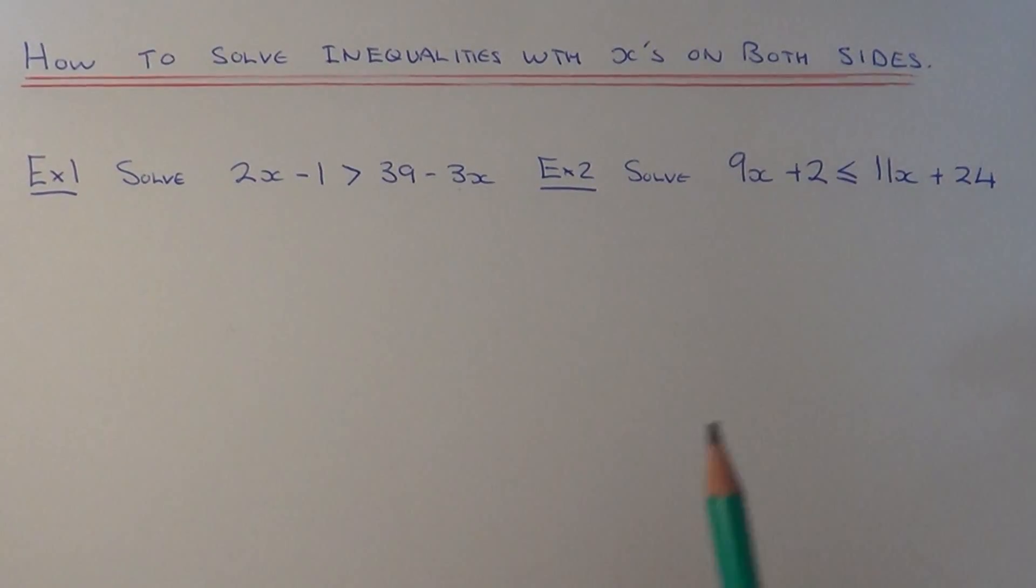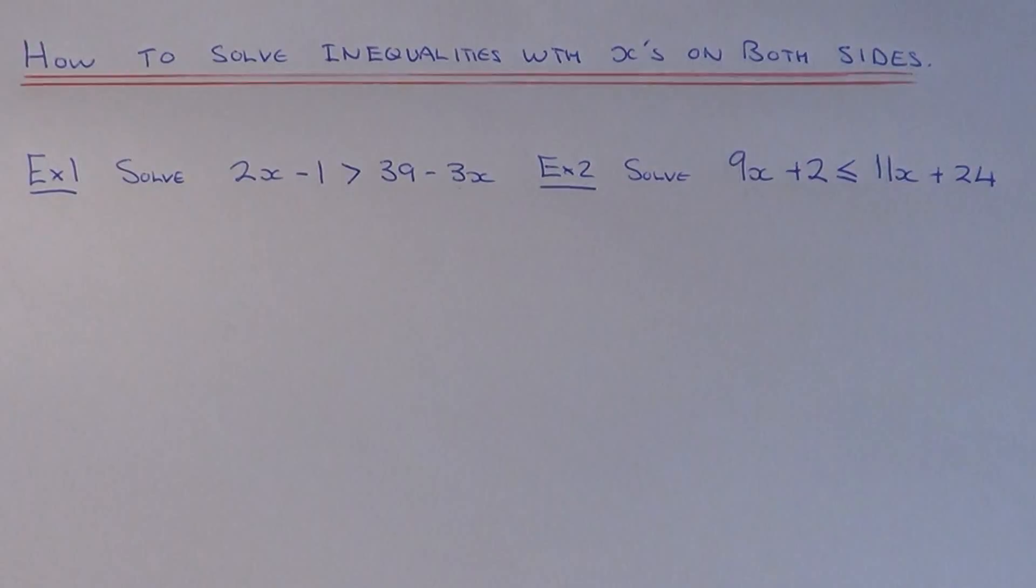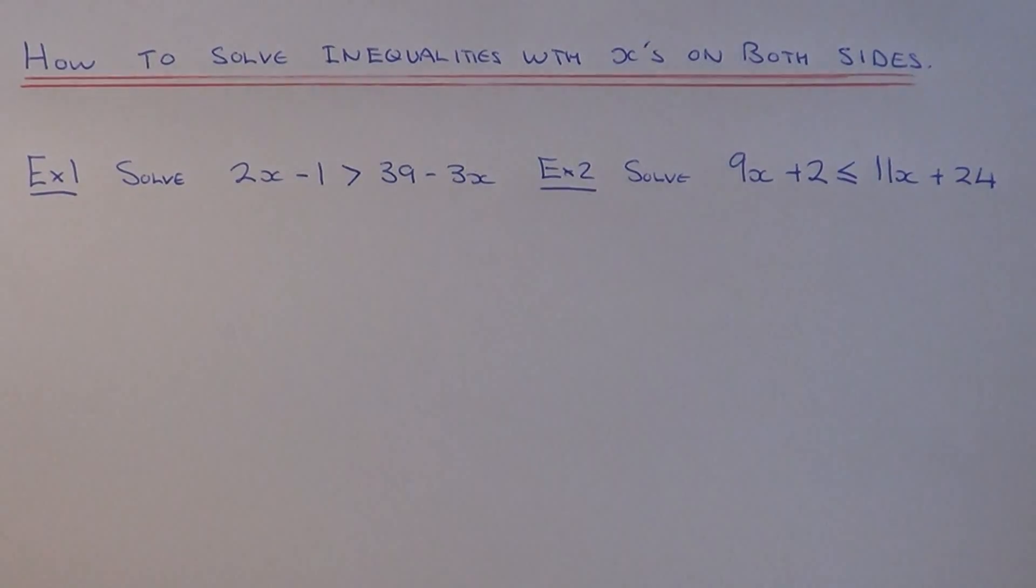The only thing you need to remember is if you have to divide or multiply by a negative number, the inequality sign needs to be turned around. If this is not the case, then you just solve it exactly the same as a normal equation. So let's work through the two examples.